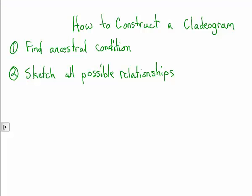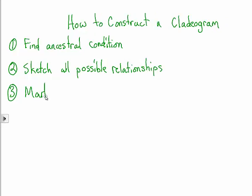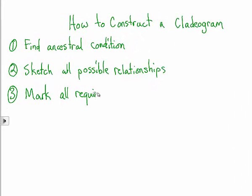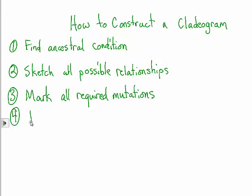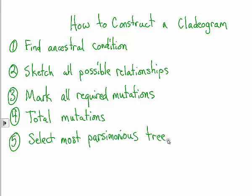Recapping the steps: first, find the ancestral condition; second, sketch all possible relationships; third, mark all required mutations; fourth, total the mutations and select the most parsimonious tree — the one requiring the fewest mutations.